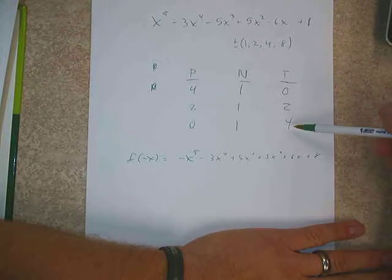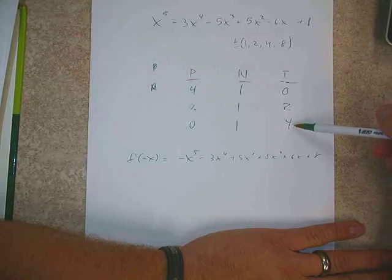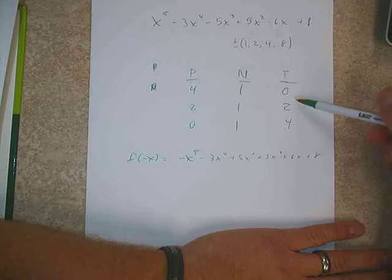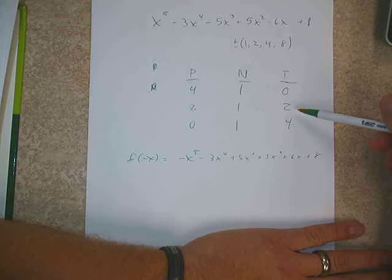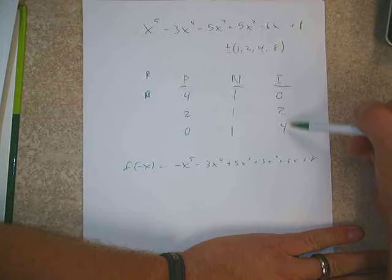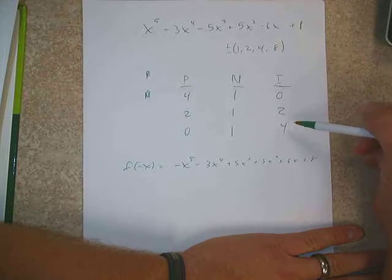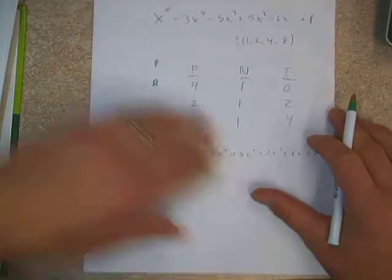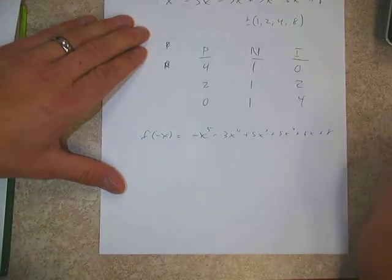Notice that the imaginary column always has to be even numbers, no matter what — knowing that imaginary roots come in pairs. Wouldn't they have to be even? If I had a 3 in there, something would be wrong, because we have real coefficients and therefore imaginary roots have to come in pairs. It's going to be either 0, 2, 4, 6, etc.